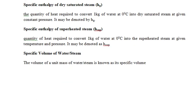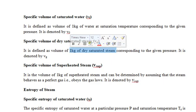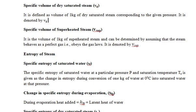The specific volume of water or steam is the volume of unit mass. The specific volume of saturated water, vf, is the volume of one kilogram of water at a given pressure. The specific volume of dry saturated steam, vg, is the volume of one kilogram of dry saturated steam at a given pressure. The specific volume of superheated steam, v_sup, is for one kilogram of superheated steam, calculated by assuming the steam obeys the perfect gas law.